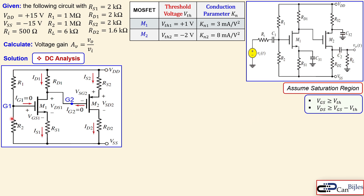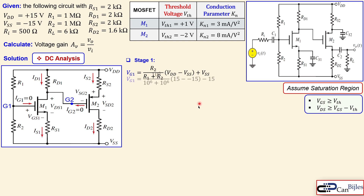With capacitors open we lose the load, leaving only the N-channel and P-channel MOSFETs with their DC currents. We designate the two nodes G1 and G2. Starting with stage one, we apply the voltage divider rule at node G1: VG1 = R2/(R1+R2) times the voltage difference, plus the offset voltage. Substituting the given values, we get exactly zero — a symmetric operating point.